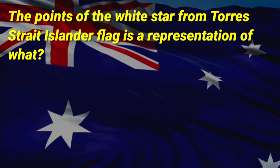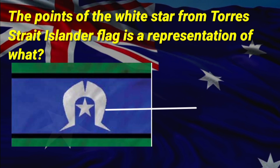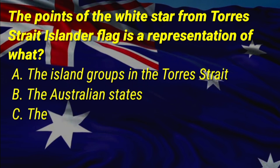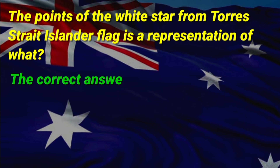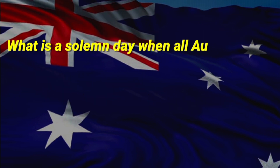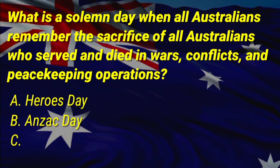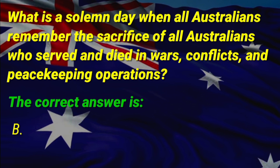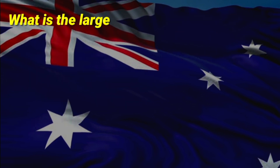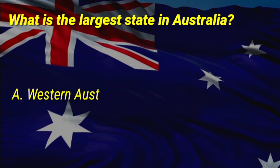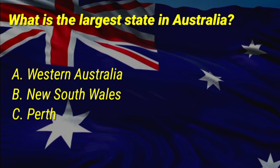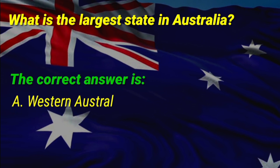The points of the white star from the Torres Strait Islander flag are a representation of what? A: the island groups in the Torres Strait, B: the Australian states, C: the Australian territories. The correct answer is A, the island groups in the Torres Strait. What is a solemn day when all Australians remember the sacrifice of those who served and died in wars? The correct answer is B, ANZAC Day. What is the largest state in Australia? The correct answer is A, Western Australia.